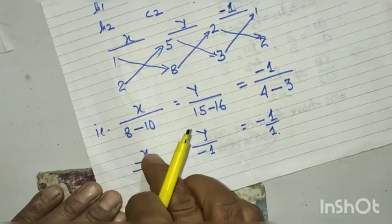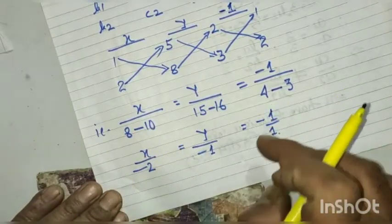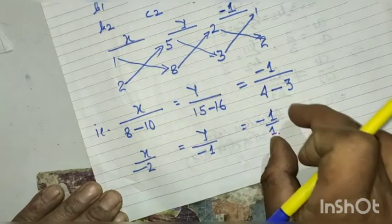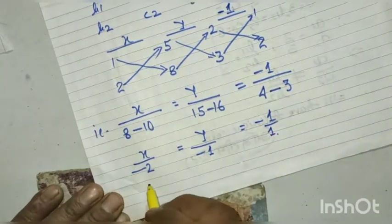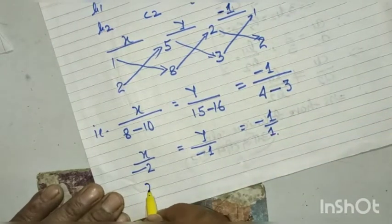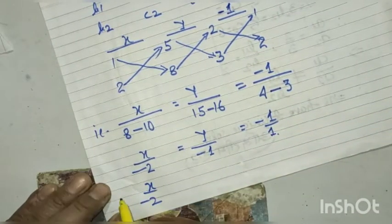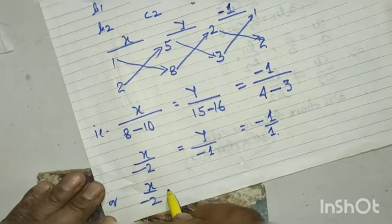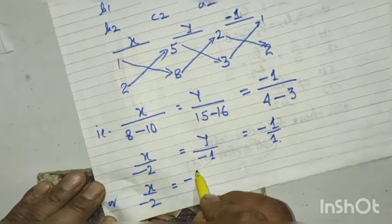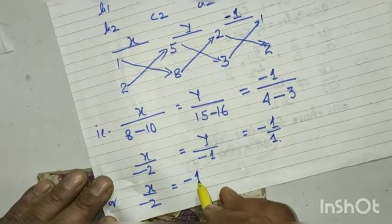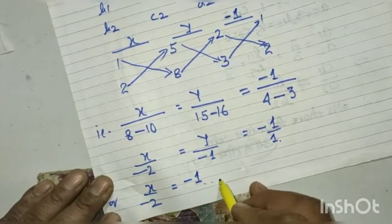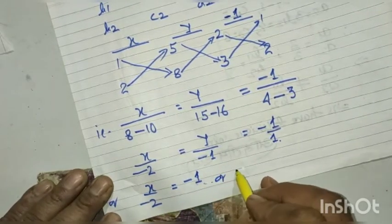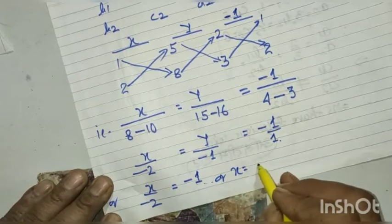So x upon −2 is equal to −1 upon 1, therefore x is equal to 2.